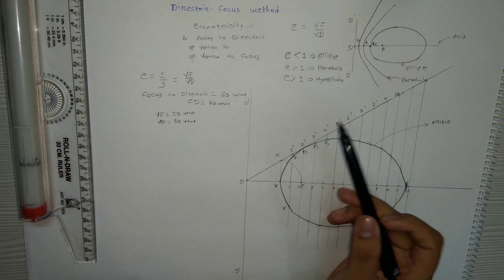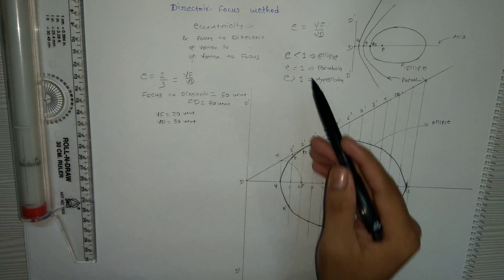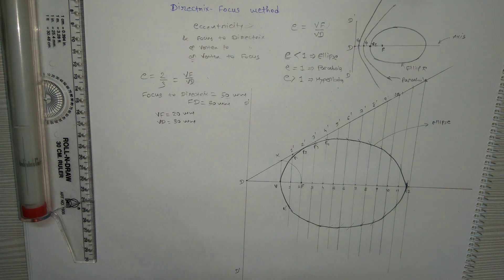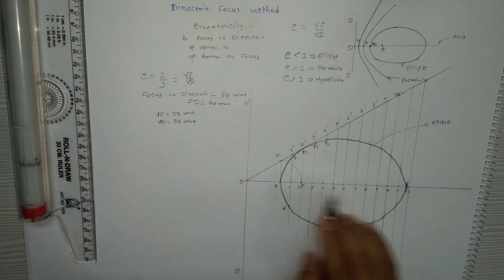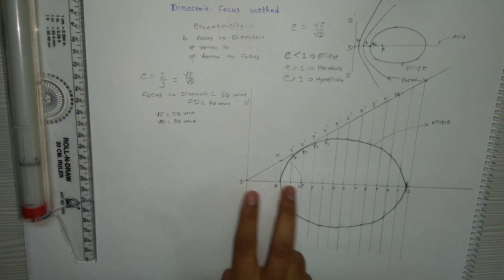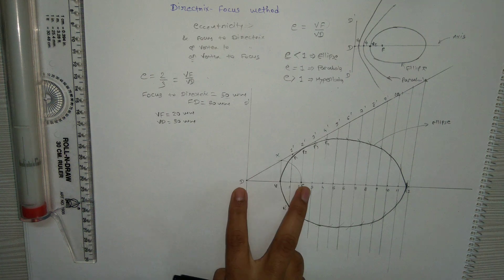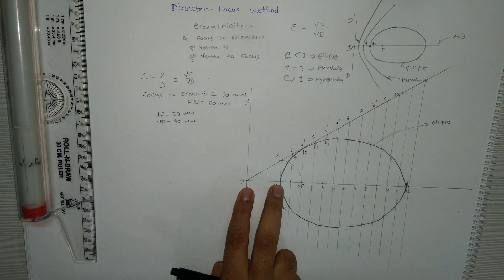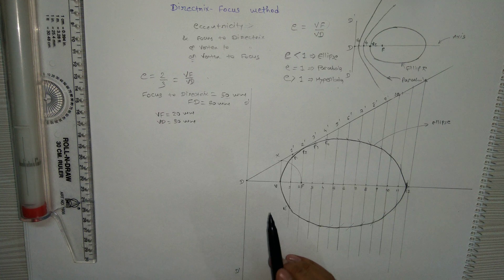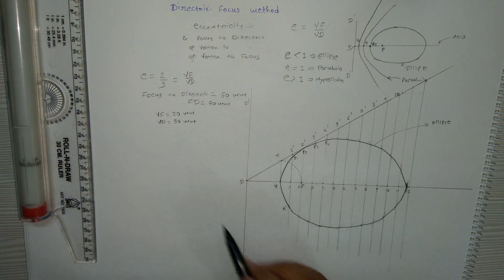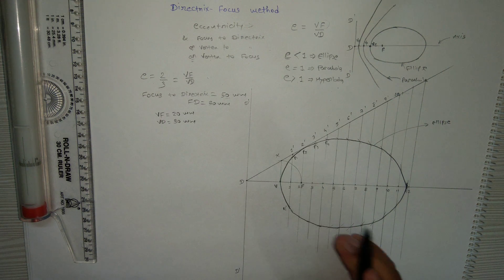If E = 1 and focus to directrix = 50 mm, the curve is a parabola. The only change is V will be exactly in the middle of F and D, so Vf = 25 mm and Vd = 25 mm. For hyperbola, eccentricity is greater than one. The same procedure is followed for both parabola and hyperbola.